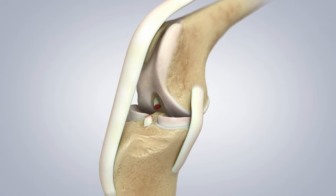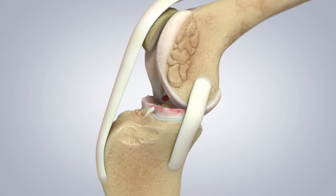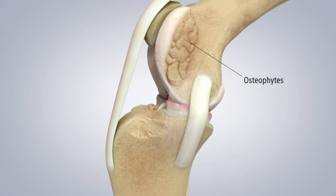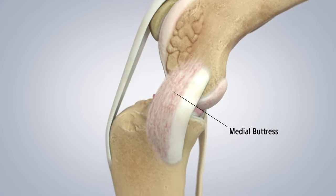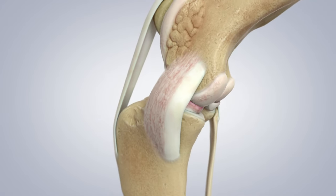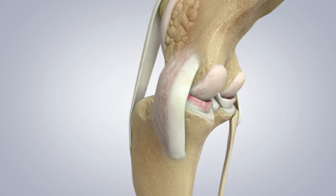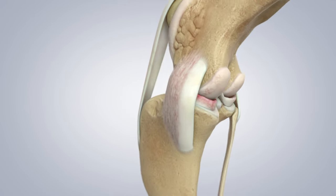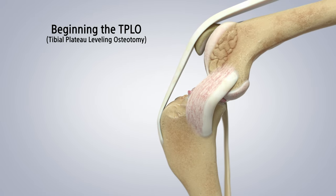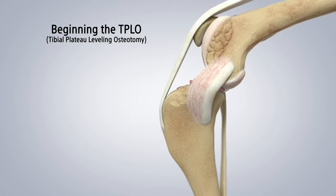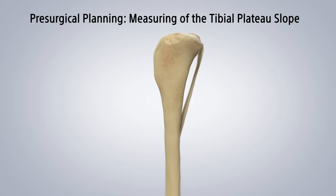You can see in red a depiction of the meniscus becoming injured along with the bony osteophytes on the femur and the medial buttress next to the medial collateral ligament. The medial meniscus is especially injured during this motion. To eliminate this cranial tibial thrust, the tibial plateau leveling osteotomy is performed.